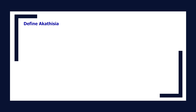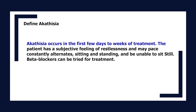Define akathisia. Akathisia occurs in the first few days to weeks of treatment. The patient has a subjective feeling of restlessness and may pace constantly, alternate sitting and standing, and be unable to sit still. Beta-blockers can be tried for treatment.